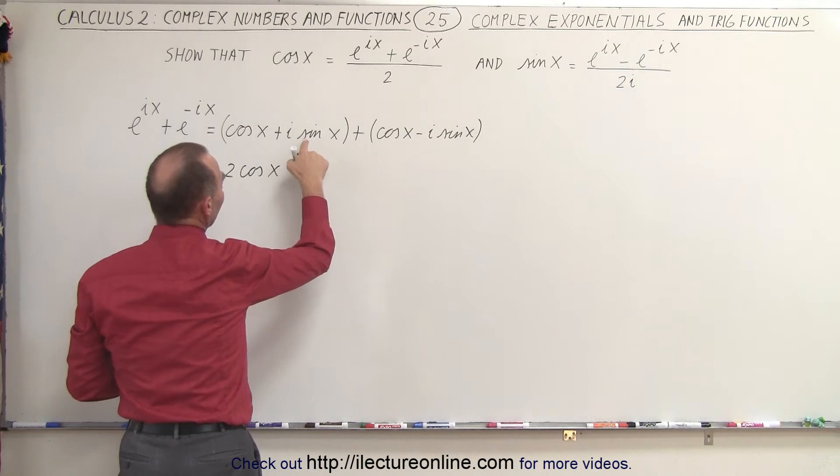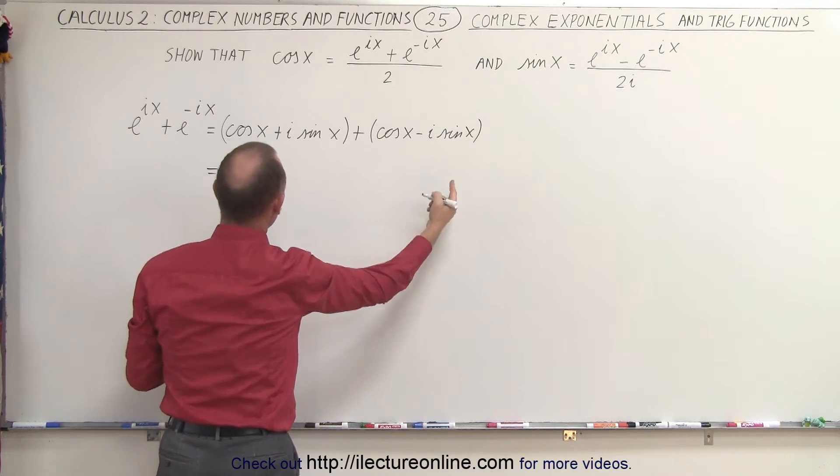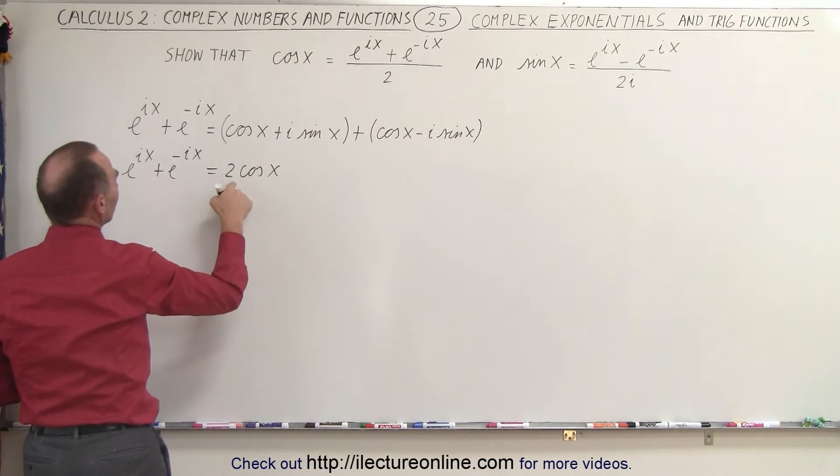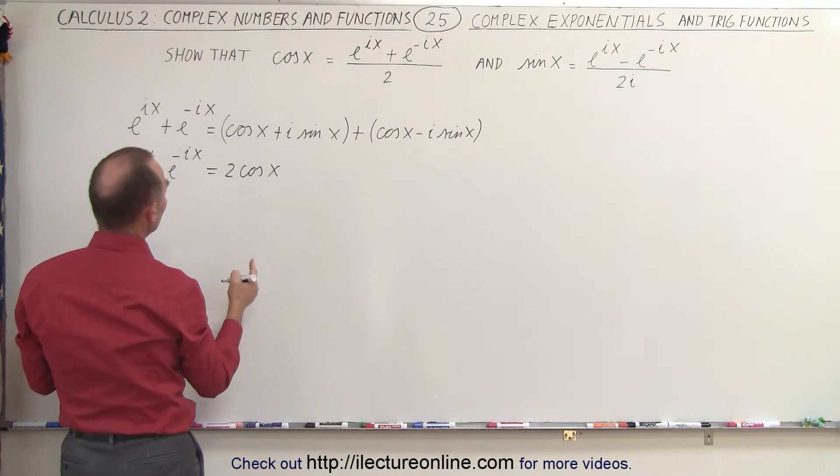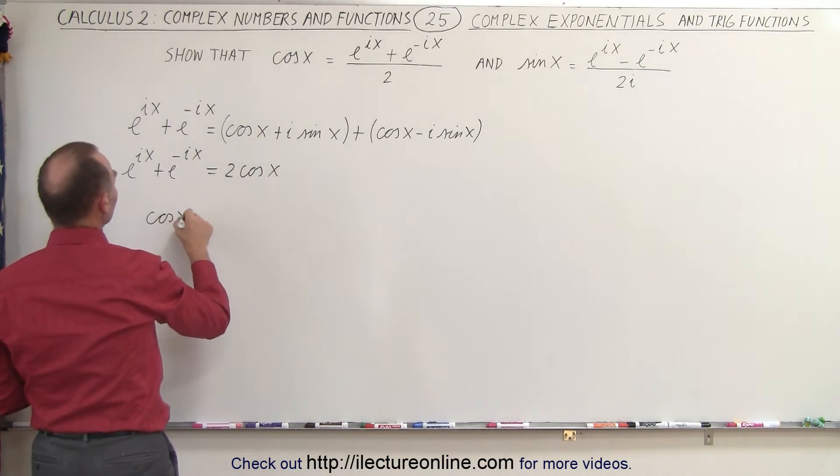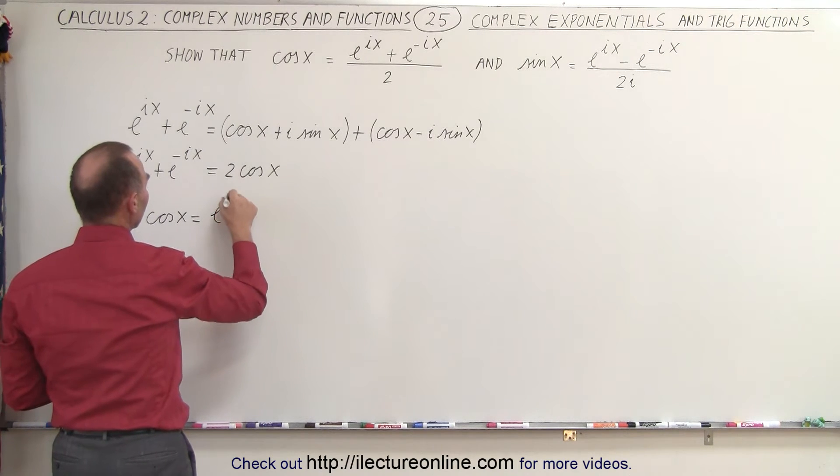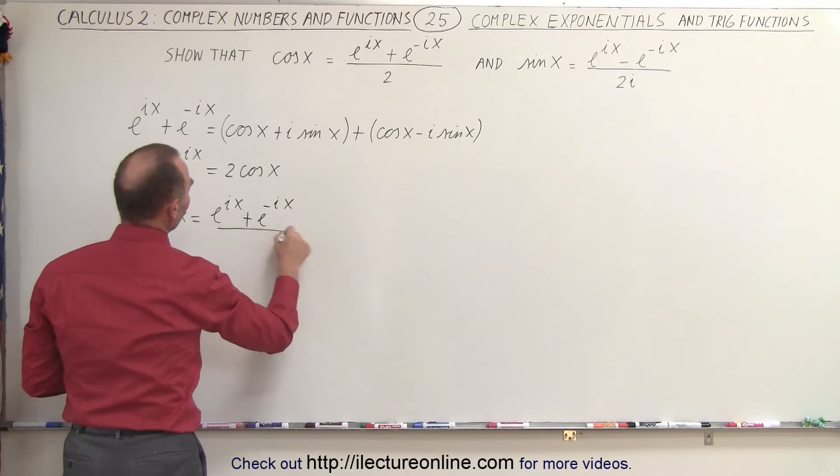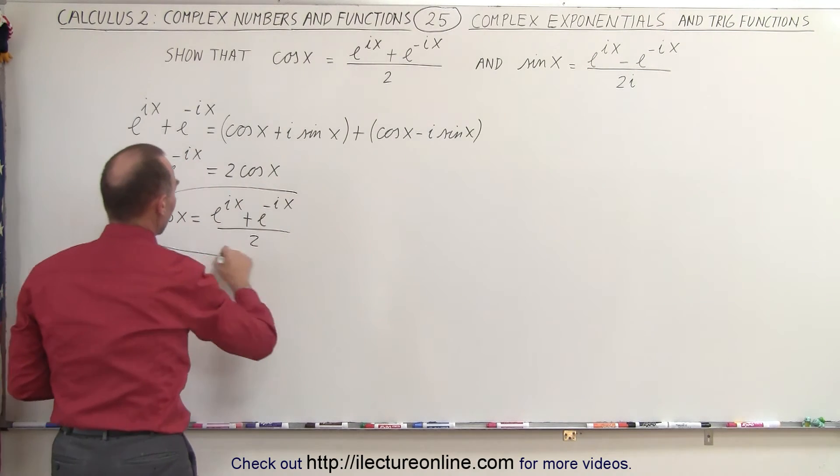But notice that i sine of x minus i sine of x cancels out. So now we have e to the ix plus e to the negative ix is equal to twice the cosine of x, which means when we divide both sides of the equation, we can write that the cosine of x is equal to e to the ix plus e to the minus ix divided by 2, just what they asked us to do.